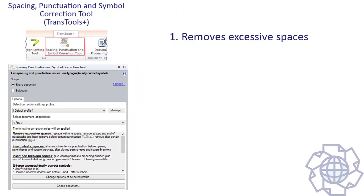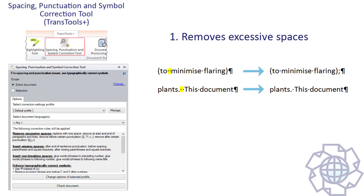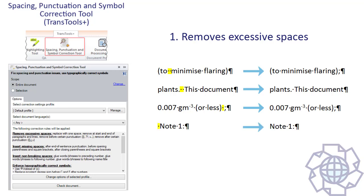First, it removes excessive spaces between words and sentences, before and after certain punctuation signs, and at the end and beginning of paragraphs and lines. Even though extra spaces occupy only a small amount of space, they will cause the text to look incorrect when the text is formatted by the customer, imported into a DTP program like InDesign, or inspected by someone who has a keen eye. Excessive spaces are really easy to spot if the reader has made hidden formatting symbols visible in Microsoft Word or other text editing programs, and their presence can make a wrong impression.